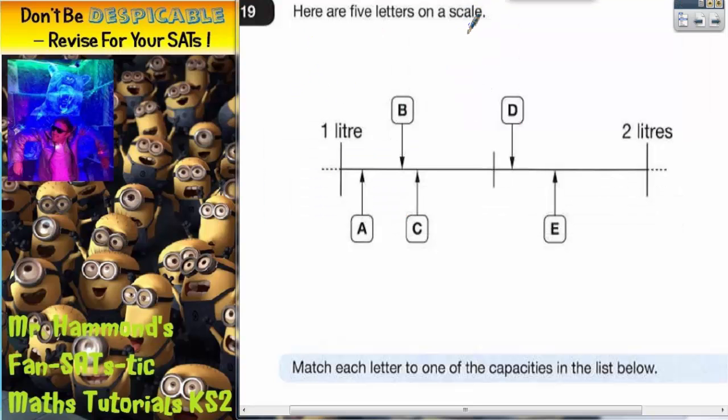Question 19. Here are five letters on a scale. So we've got A, B, C, D and E.